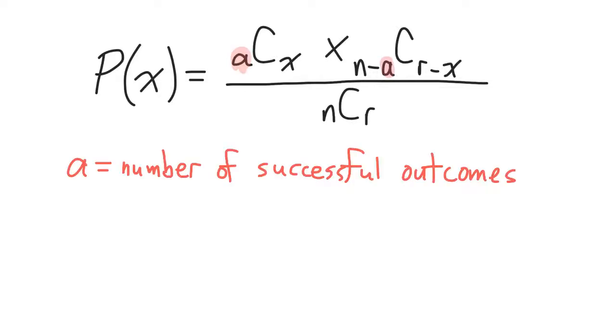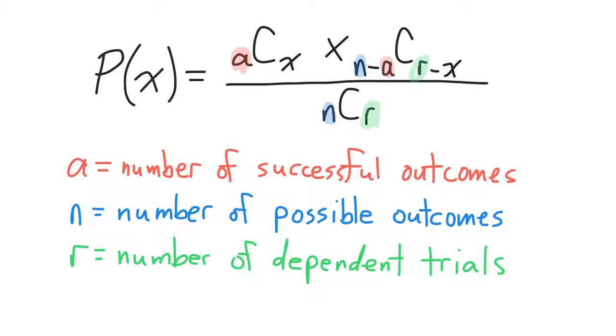Where A is the number of successful outcomes, N is the number of possible outcomes, and R is the number of dependent trials.